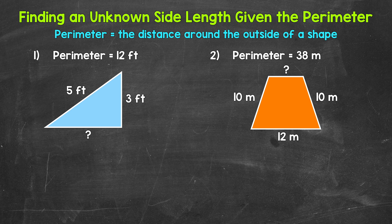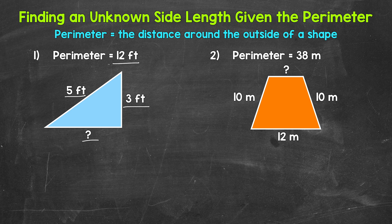Let's jump into number one, where we have a triangle with a perimeter of 12 feet, and given side lengths of five feet and three feet. We need to figure out this side length right here. We basically need to use what we know to figure out what we don't know. We know the perimeter is 12, we know two of the side lengths, and we know that we need to add all of the side lengths to find the perimeter. So five feet plus three feet plus that missing side length will equal the perimeter of 12 feet.